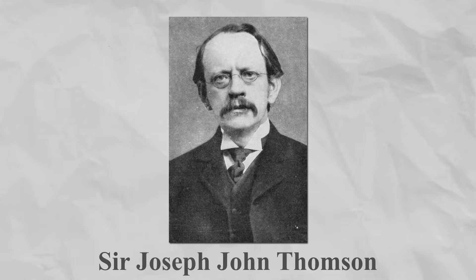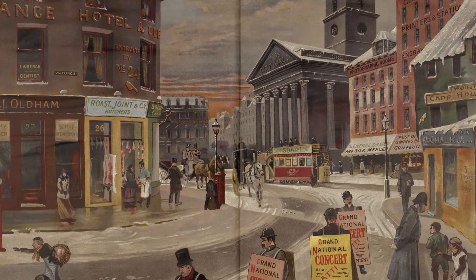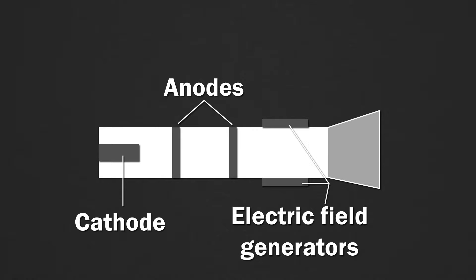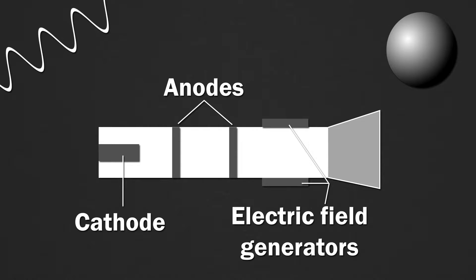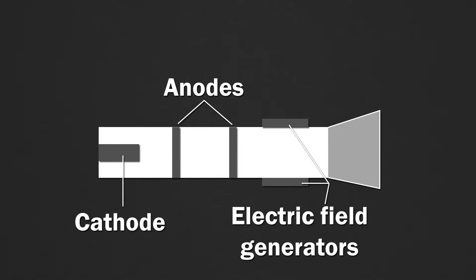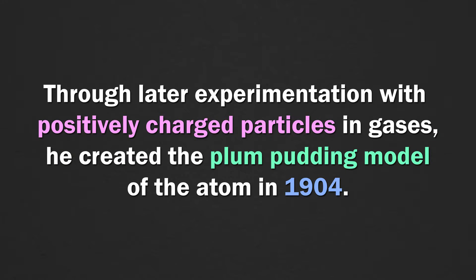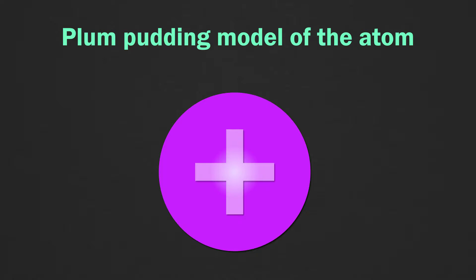In his time, electricity was beginning to be used widely, but no one really understood the inner workings of how it functioned. Thomson undertook the challenge of finding out with a cathode ray tube that shoots electricity from the bottom of a glass tube to its top. Some thought that the rays emitted were waves while others suspected particles. Upon having electric and magnetic fields surround the tube, Thomson witnessed the cathode rays bending to one side just as a stream of charged particles would. Through later experimentation, he created the plum pudding model of the atom in 1904, in which there were small negatively charged electrons distributed within a solid positively charged mass. This was the moment the first subatomic particle was discovered: the electron.